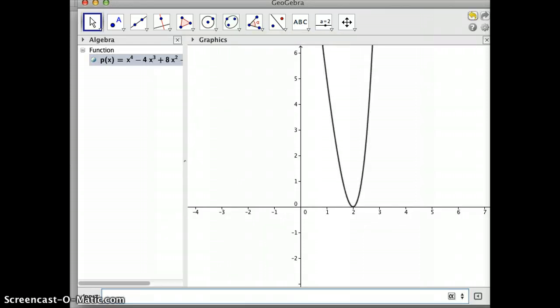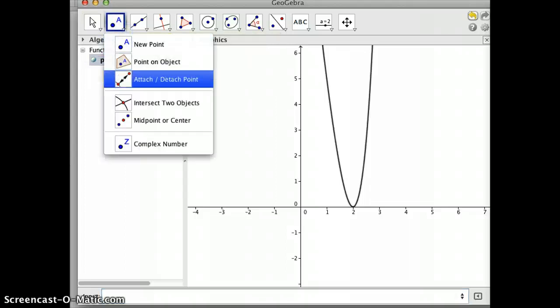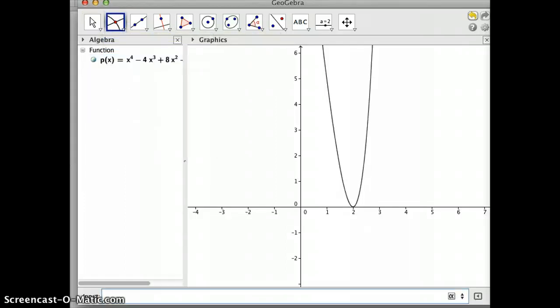You notice we have this x-intercept at 2. By the fundamental theorem of algebra, I know I have 4 roots here. Since it bounces, I'm going to intersect two objects: the function and the x-intercept to find our roots. There we have it, 2 comma 0. Since it bounces—goes down from left to right, bounces off the x-intercept and goes back up—I know that 2 is a double root, but I have 2 more roots here.